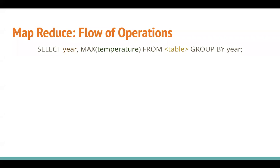Before we go ahead, let's talk about one more thing. If you have to translate the previous use case of finding the maximum temperature for every year into SQL, you would select the year and maximum of temperature from some table and group by year. Here we can say that year is the aggregate key or the grouping key, and temperature is the aggregated field. In the map phase, it's very important to understand what is your aggregate key and what is your aggregated key in MapReduce.